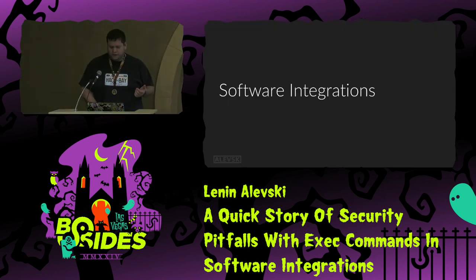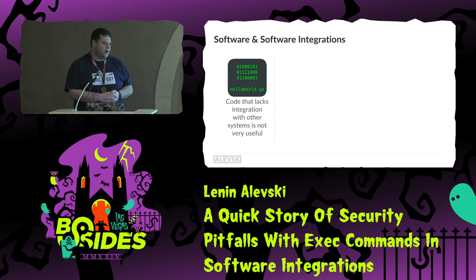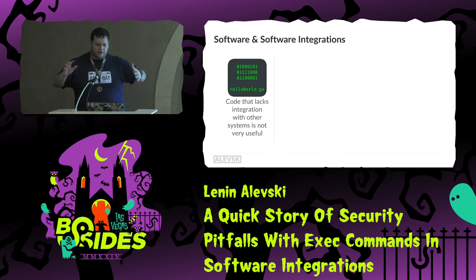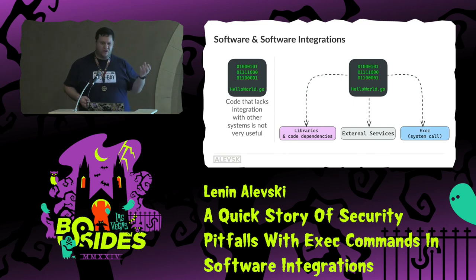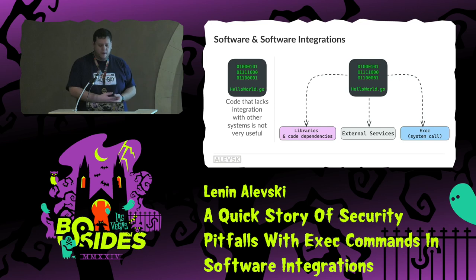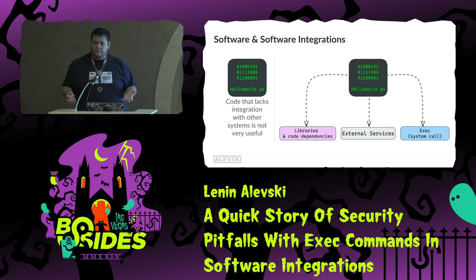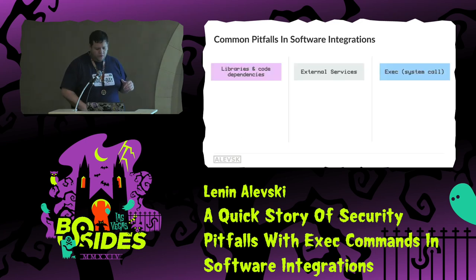Whether you are just starting to write your first line of code or you are an experienced developer, code that doesn't touch anything else — like any external platform or system — is not very useful. In order for code to be useful, it needs to have some type of integration with other platforms. These integrations are usually in the form of libraries and dependencies, meaning you are importing other people's code into your programs. But you can also do it through calling external services, meaning you are executing other people's APIs through a channel like the network. And also you can do what is called exec system calls, meaning you are executing programs in your same process namespace.